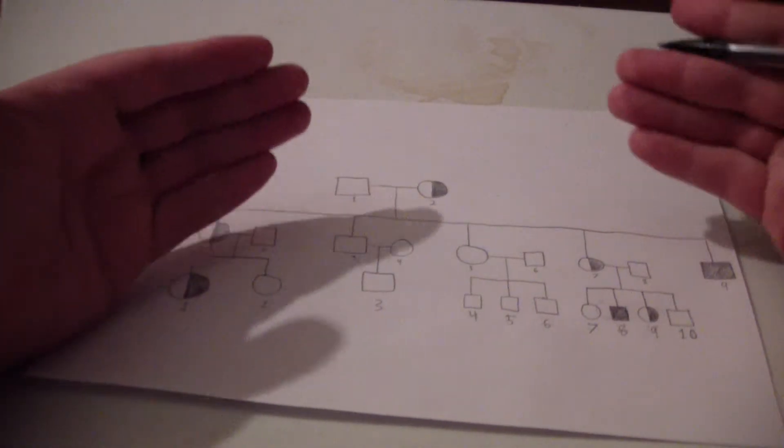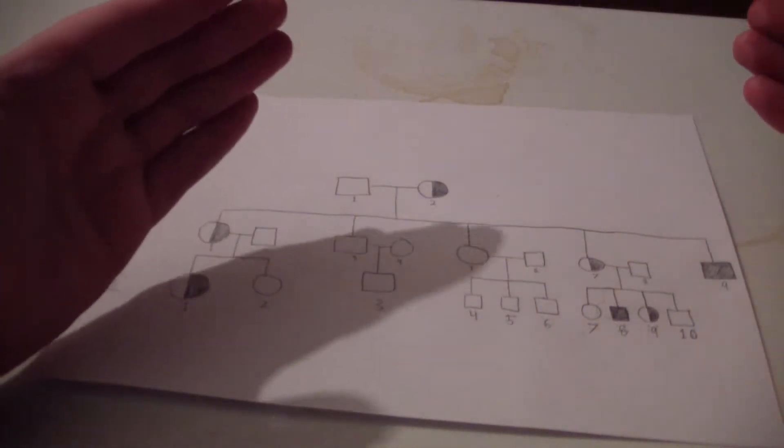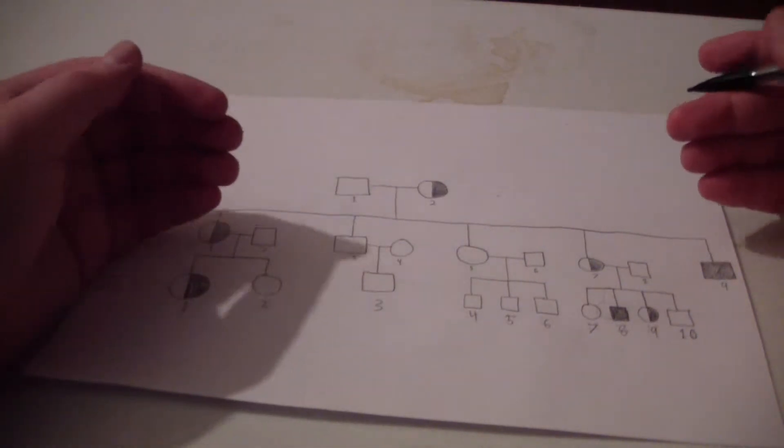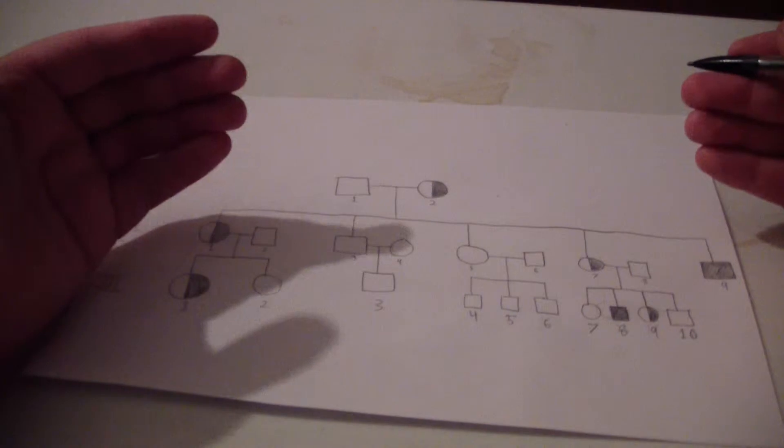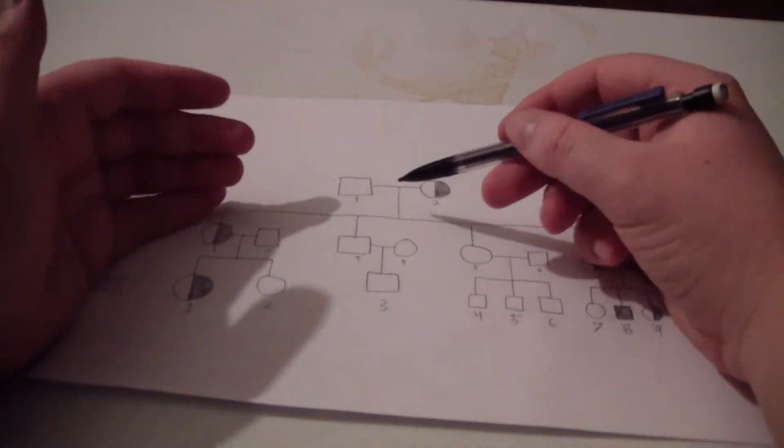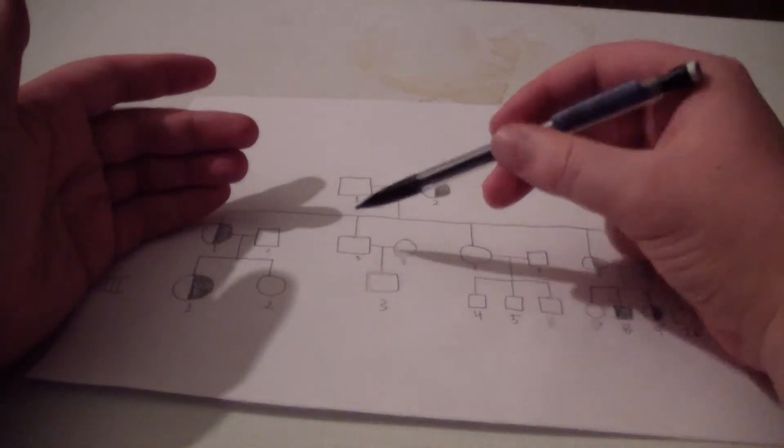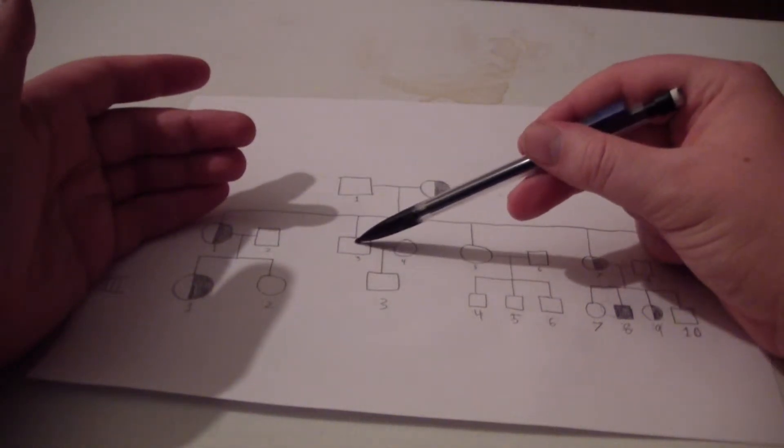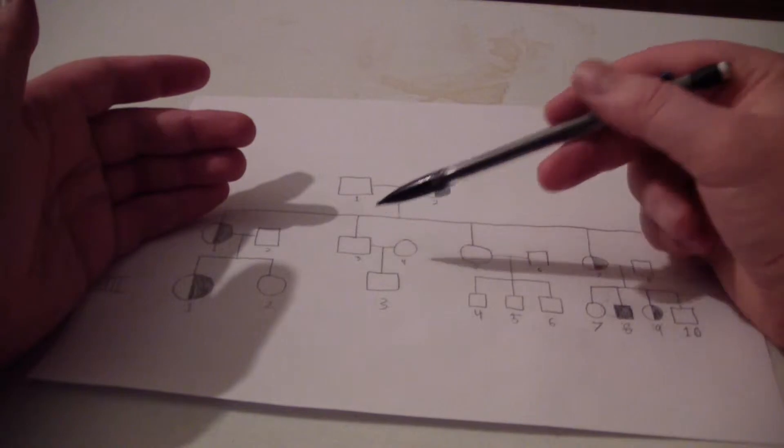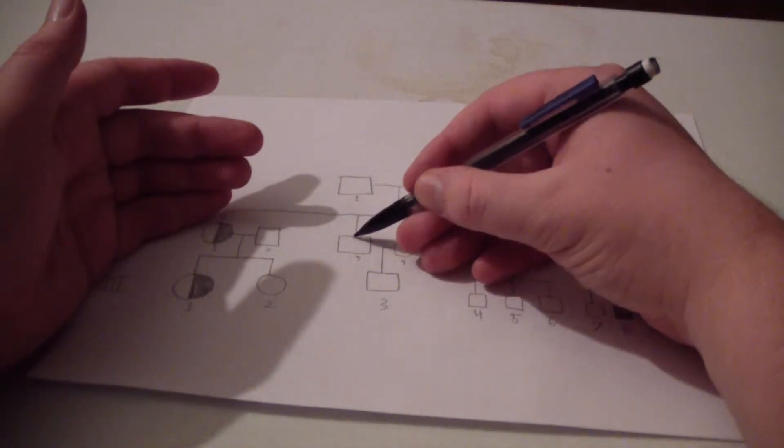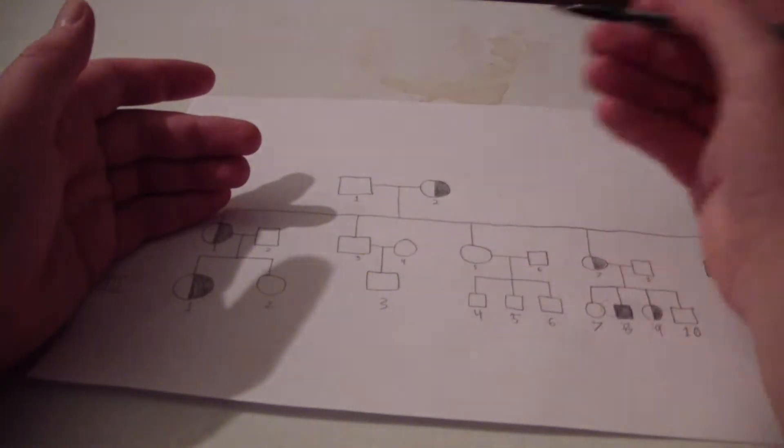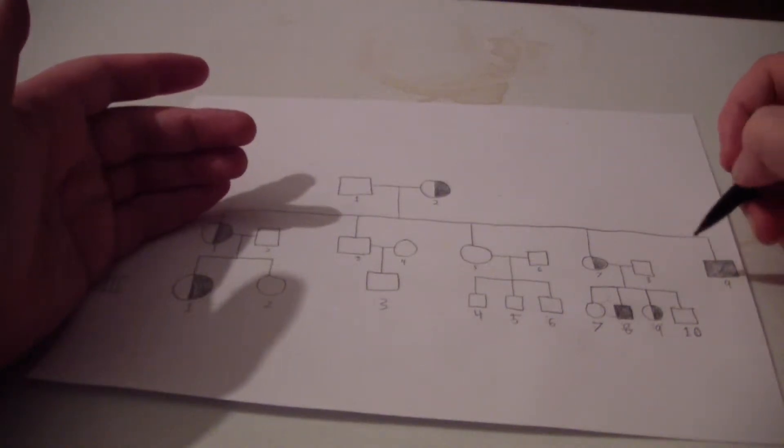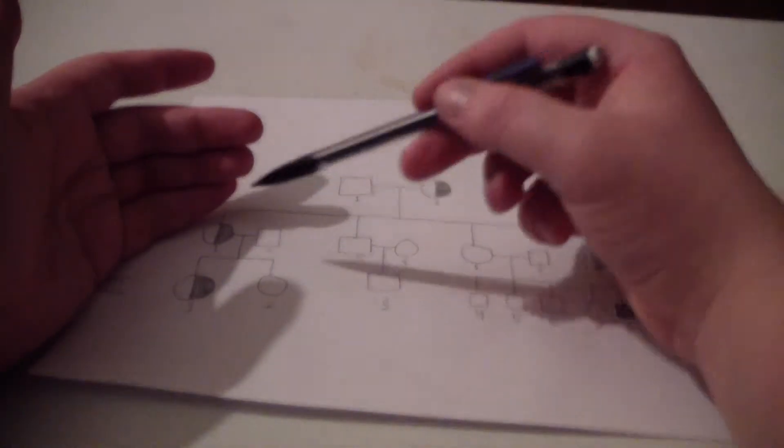They only inherit the X chromosome from their mother. So the males have a 50-50 chance of inheriting the X chromosome with the mutant allele, and a 50-50 chance of inheriting the X chromosome with the healthy or wild type allele. In this family we have a male who is not affected. Notice we never see a male with a line through it and colored in.